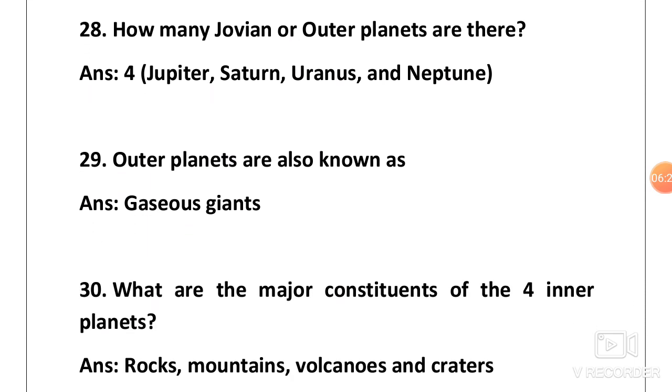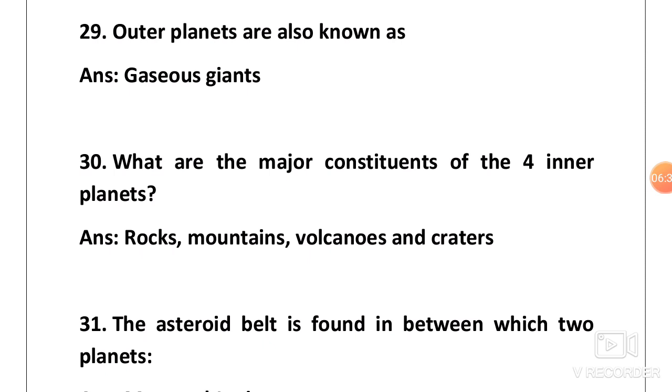Next one, how many Jovian or outer planets are there? The next 4, the outer 4. They are Jupiter, Saturn, Uranus and Neptune. Next is outer planets are also known as gaseous giants.